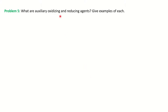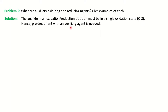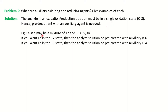The next question: what are auxiliary oxidizing and reducing agents? In an oxidation-reduction titration the analyte should be in a single oxidation state. If the analyte is not in a single oxidation state, you must pre-treat it with an auxiliary agent to bring it into a single oxidation state. For example, if you have an iron salt mixture containing both Fe²⁺ and Fe³⁺, and you want iron in the +2 state, you pre-treat with an auxiliary reducing agent to convert all Fe³⁺ to Fe²⁺.